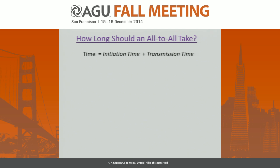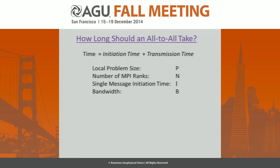The time for an all-to-all — global communication between a group of processors — can be broken down into the initiation time (the time to get somebody on the telephone) and the transmission time (the time to actually tell them what you have to say). I think about this in terms of four variables: local problem size P, number of MPI ranks N, time to initiate a single message I, and bandwidth B.